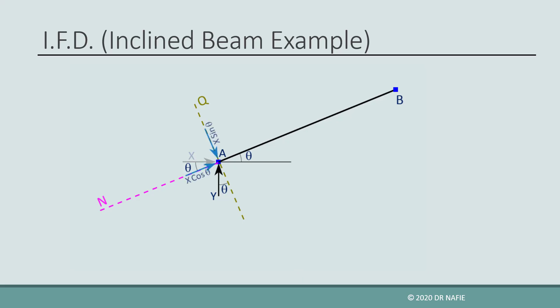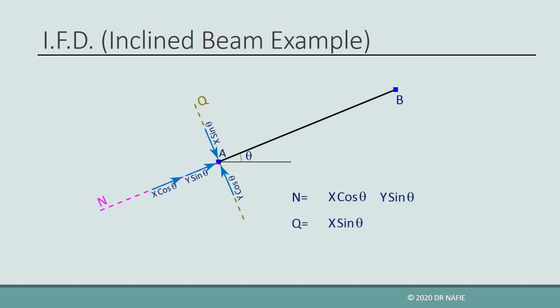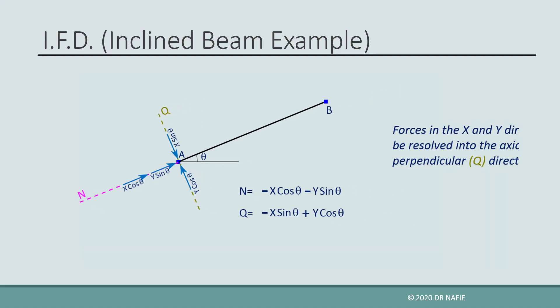By resolving the X and Y forces into their components in the N and Q directions, we will find that the normal force N will be the sum of two components: X cosine theta and Y sine theta. The shear force Q will be the sum of two components: X sine theta and Y cosine theta. The sign of these components will depend on the direction of the X and Y forces and the sign convention used for evaluating N and Q. For the shown sketch, the signs will be as shown.